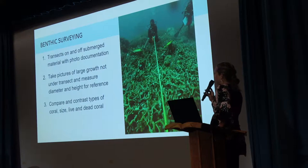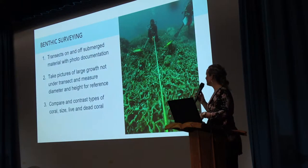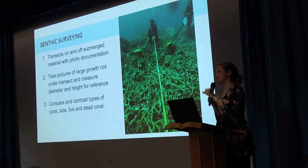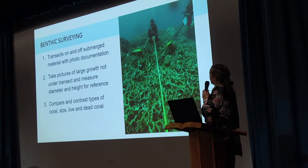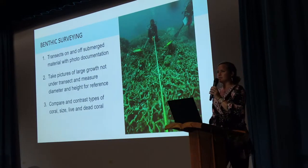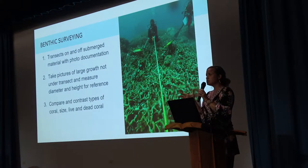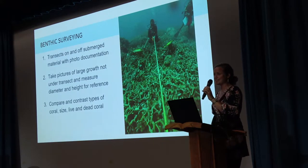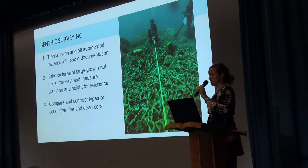For benthic surveying, we run a transect on and off the submerged material as a control. Then we use photo documentation — I don't want to stress folks out having to record everything perfectly and identify every type of coral. They just take photos periodically along a transect, then measure the diameter of things under the transect if they can. At the end, they go around and photograph and measure any large coral growths that weren't on the transect, just to document what's on a site. This is in Palau off of the Jake Seaplane — there's just tons of Acropora everywhere all around the seaplane. It was awesome and was a really easy survey to do.